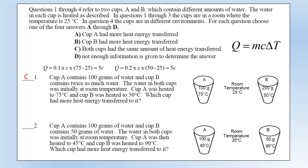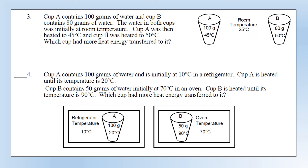For question two: cup A has 100 grams heated to 45 degrees, cup B has 50 grams heated to 90 degrees. This one often trips people up. Mass 0.1 kg, temperature change of 20 gives Q = 2C. On the second one, temperature change of 65 with a mass of 0.05 kg gives a thermal energy of 3.25C. So we can clearly see cup B has had more heat energy transferred.